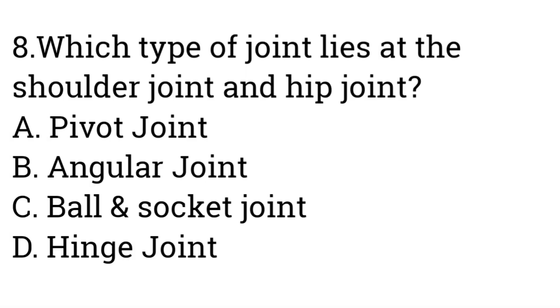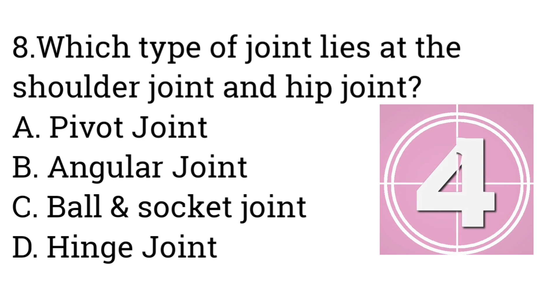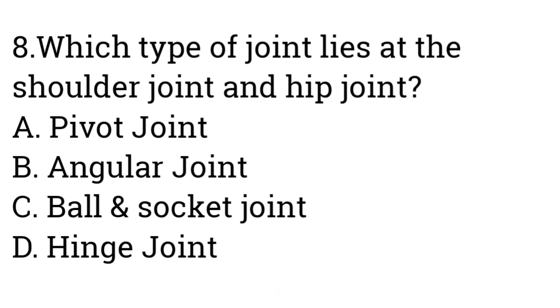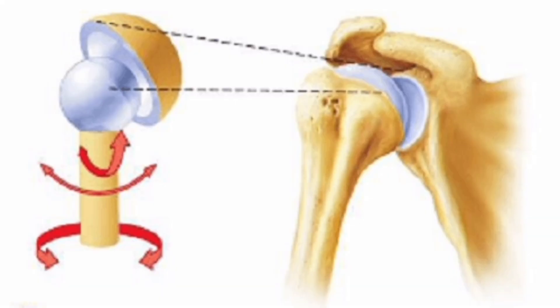Question number eight: Which of the following joints is found at the shoulder joint and hip joint? Option A: Pivot joint, B: Angular joint, C: Ball and socket joint, D: Hinge joint. Answer is Ball and socket joint. The shoulder and hip joints consist of a ball-like sphere called the head, which fits into a cup-like depression and is freely movable in all directions.